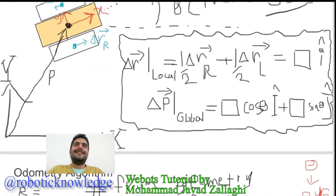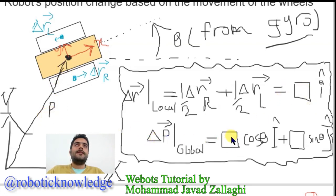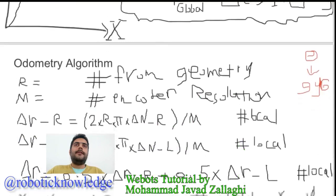Considering that we can project this vector, we can say that the change in this interesting position vector is equal to the magnitude times cosine of theta in the global x-direction, plus the magnitude times sine of theta in the global y-direction.